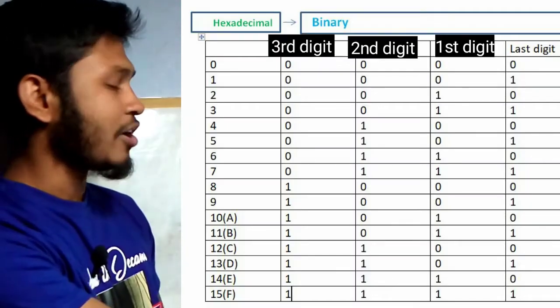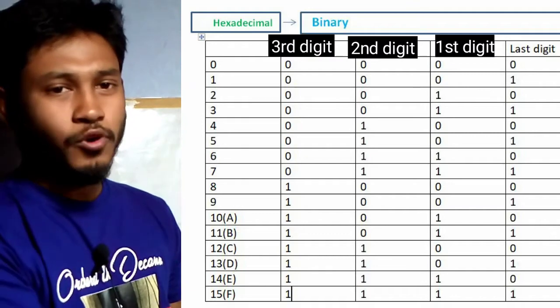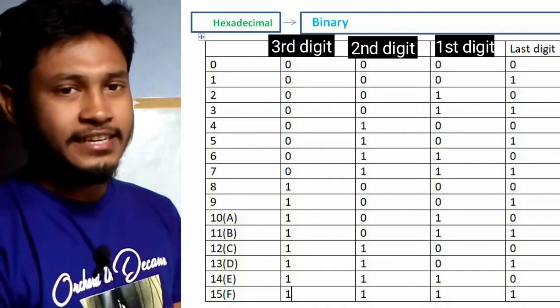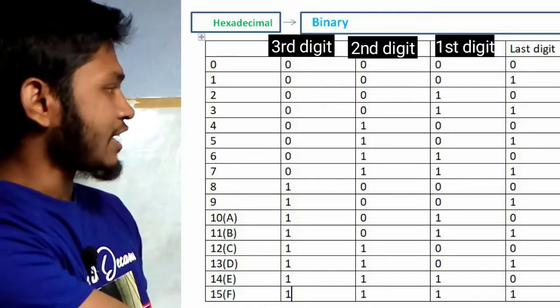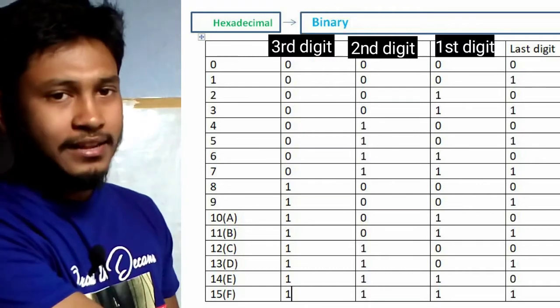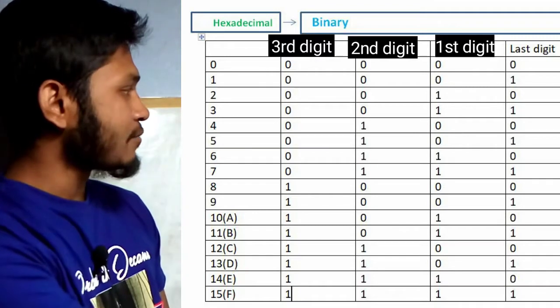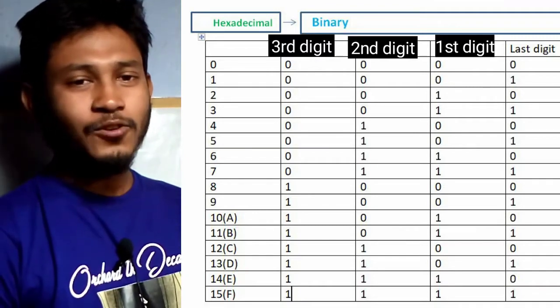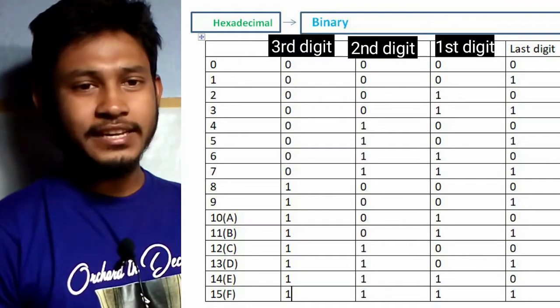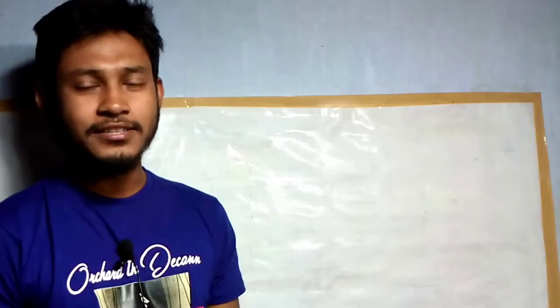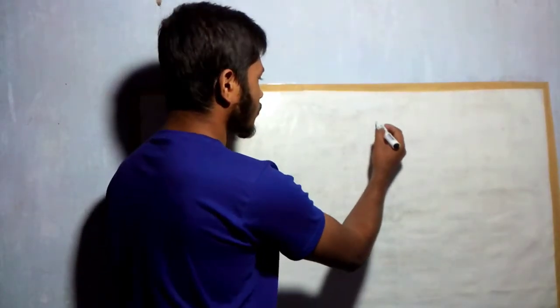For hexadecimal to binary conversion, I'll show you the method. We can convert decimal to binary in multiple ways. I've already covered BCD decoder in a previous tutorial. We'll use the BCD decoder method today.